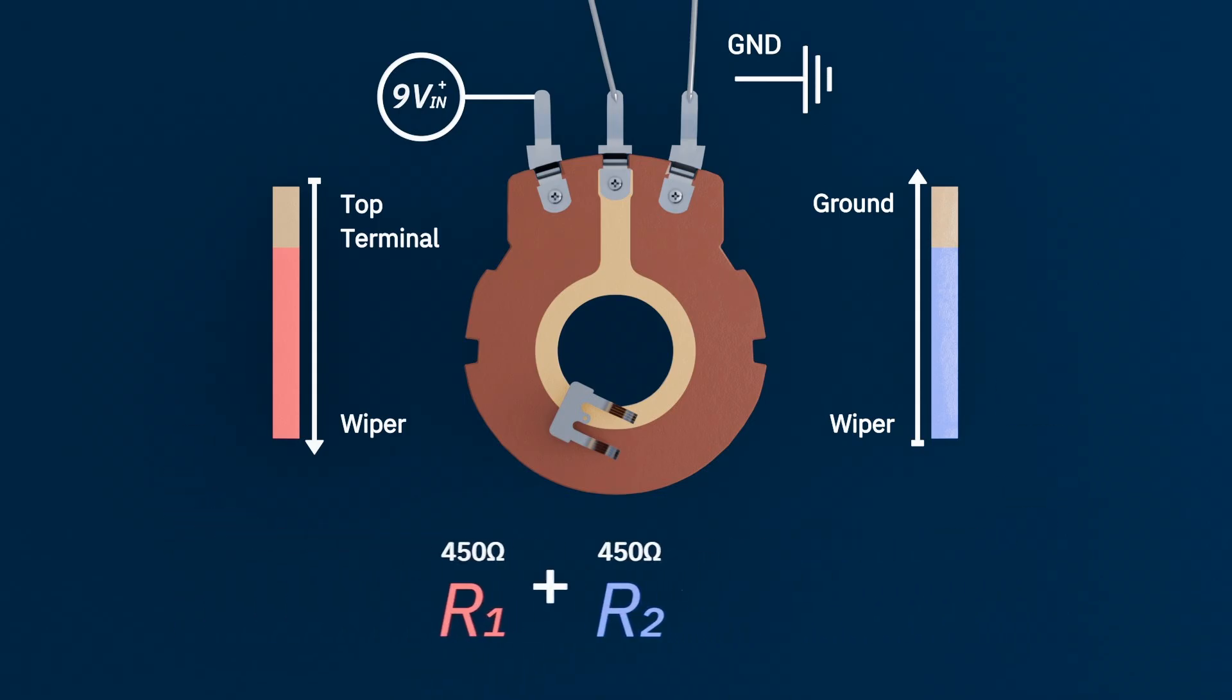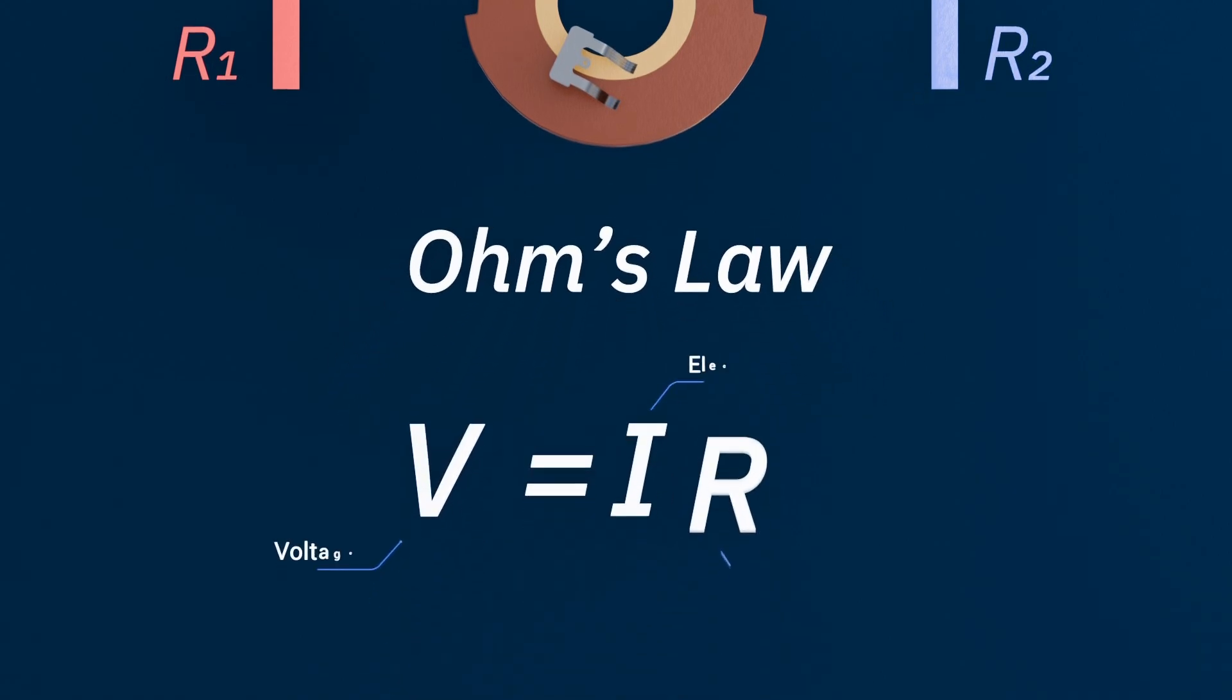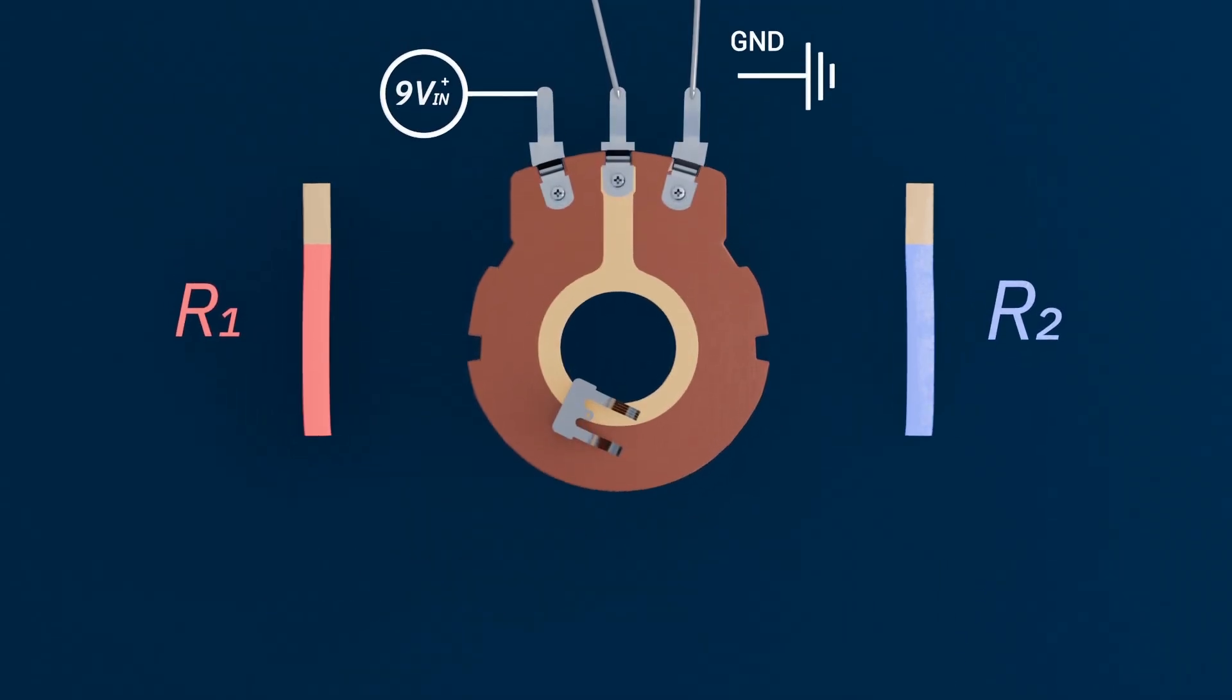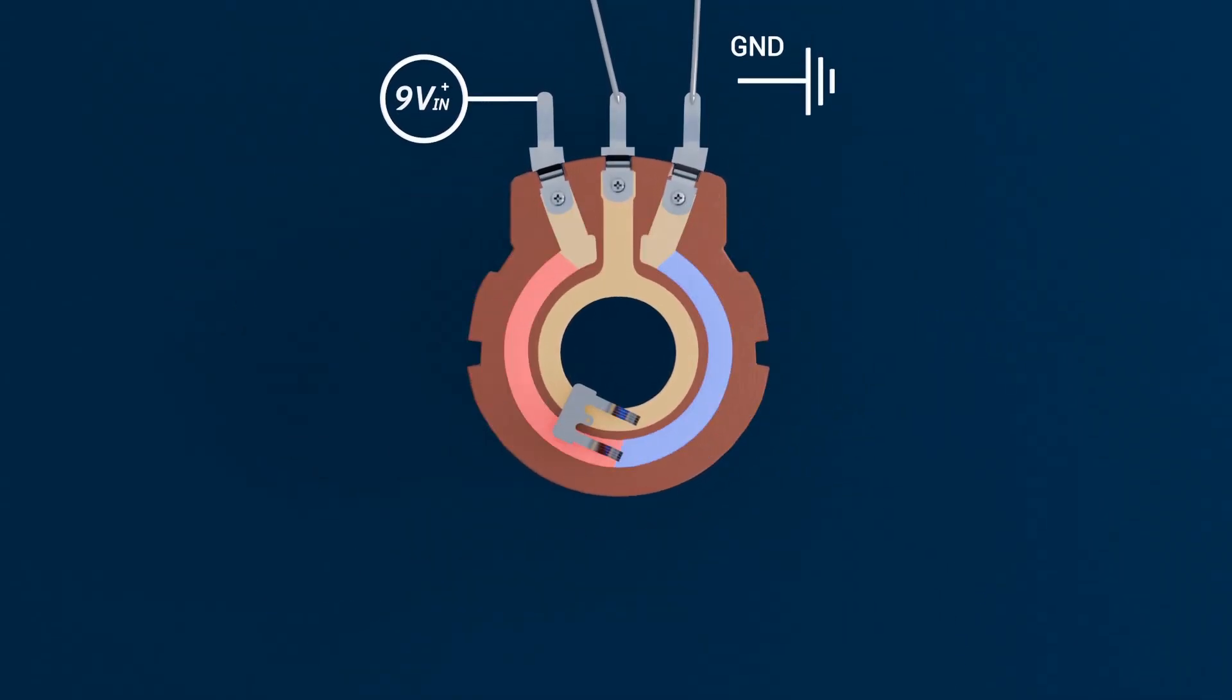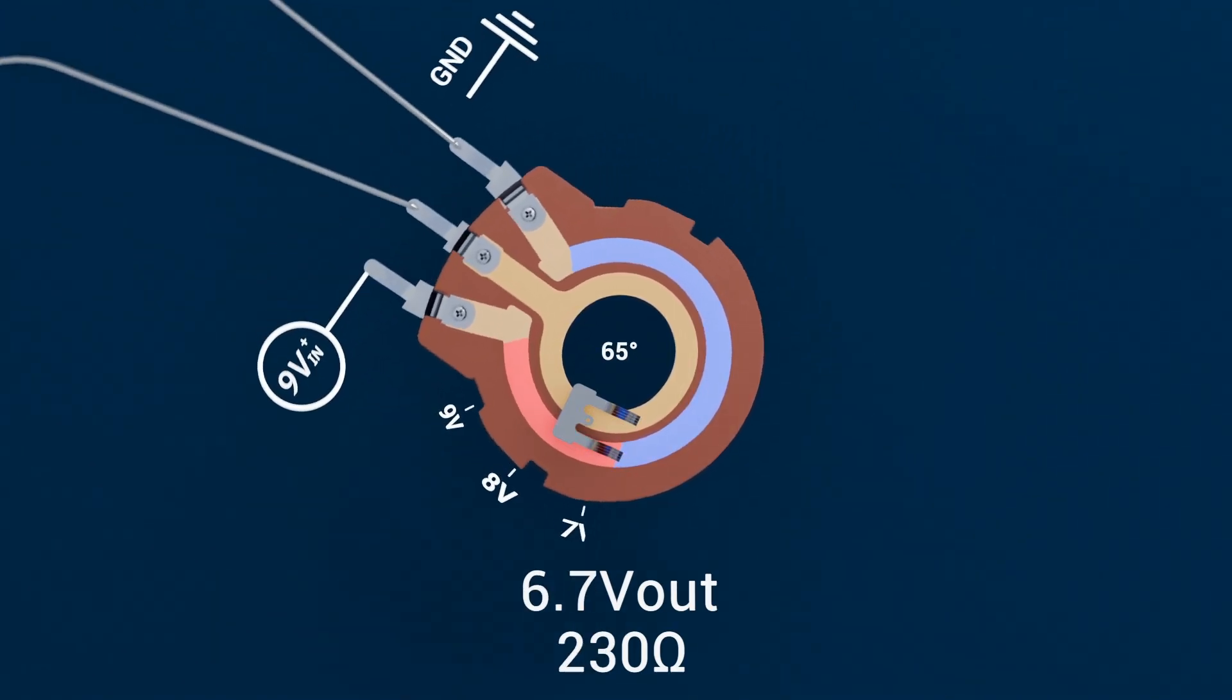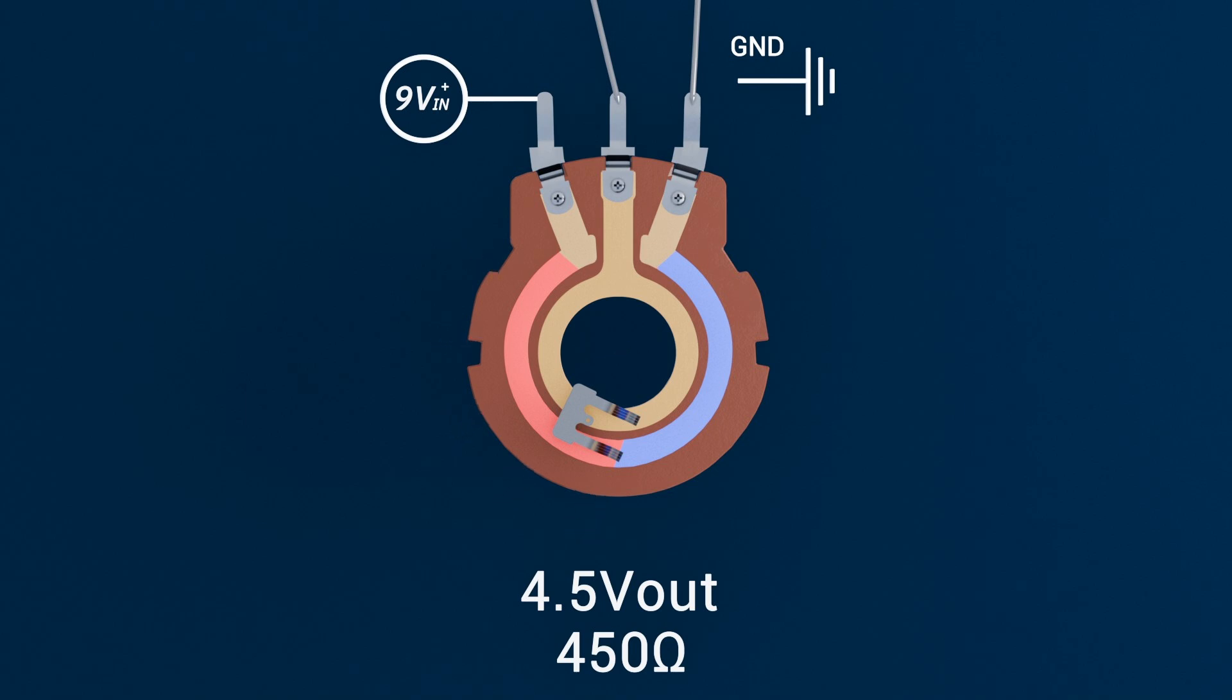And together, they always add up to the total resistance of the potentiometer. At this point, the potentiometer becomes a voltage divider. And this is where Ohm's law comes in. Ohm's law tells us the voltage across any resistor is the current flowing through it multiplied by its resistance. Because R1 and R2 are connected in series, the same current flows through both of them. So the voltage drops across each section in proportion to its resistance. The larger the resistance, the larger the voltage drop. The smaller the resistance, the smaller the drop.